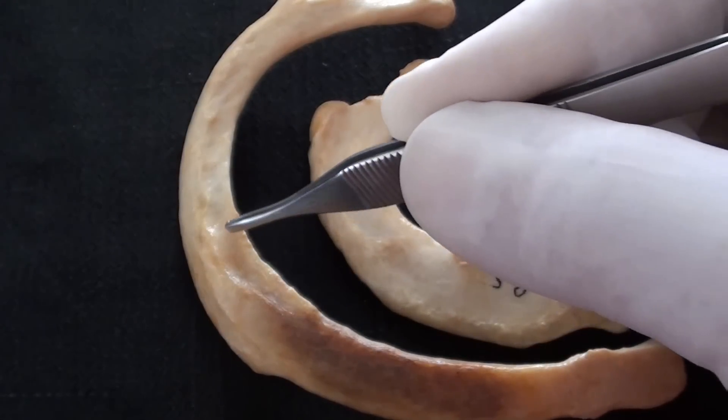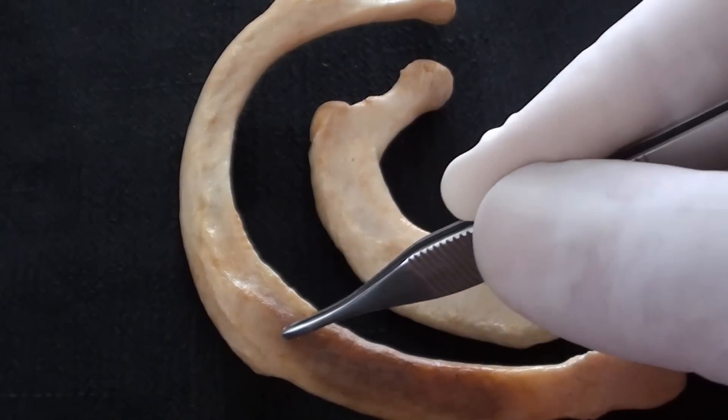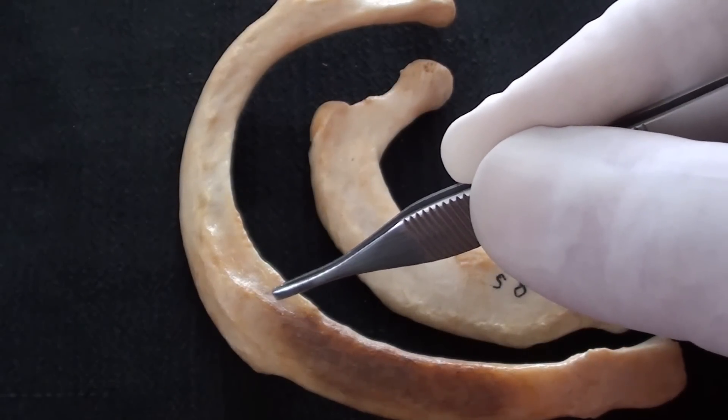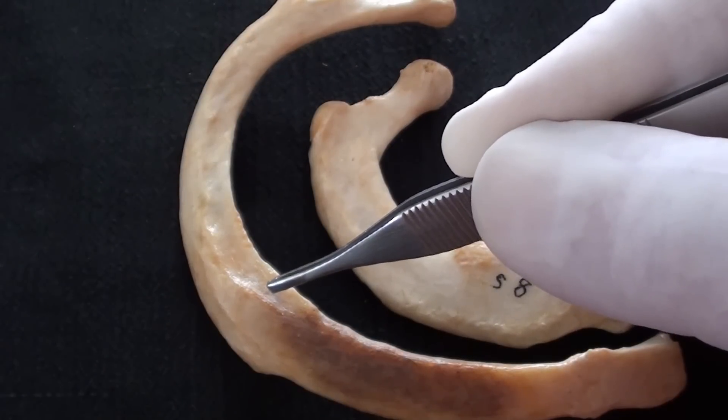This area is known as the tuberosity of the serratus anterior muscle. Although the muscle has multiple attachments on different ribs,